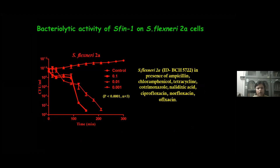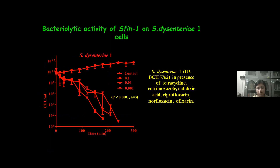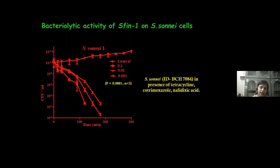Regarding the bacteriolytic activity of SF-1 on its different host cells — Shigella flexneri, Shigella dysenteriae, and Shigella sonnei — Shigella flexneri cells were grown in the presence of several antibiotics and SF-1 phage was added at different MOI. It was found that within three and a half hours, almost all cells are killed. The same phenomenon was observed for Shigella dysenteriae 1, but for Shigella sonnei the lytic property is more rapid.